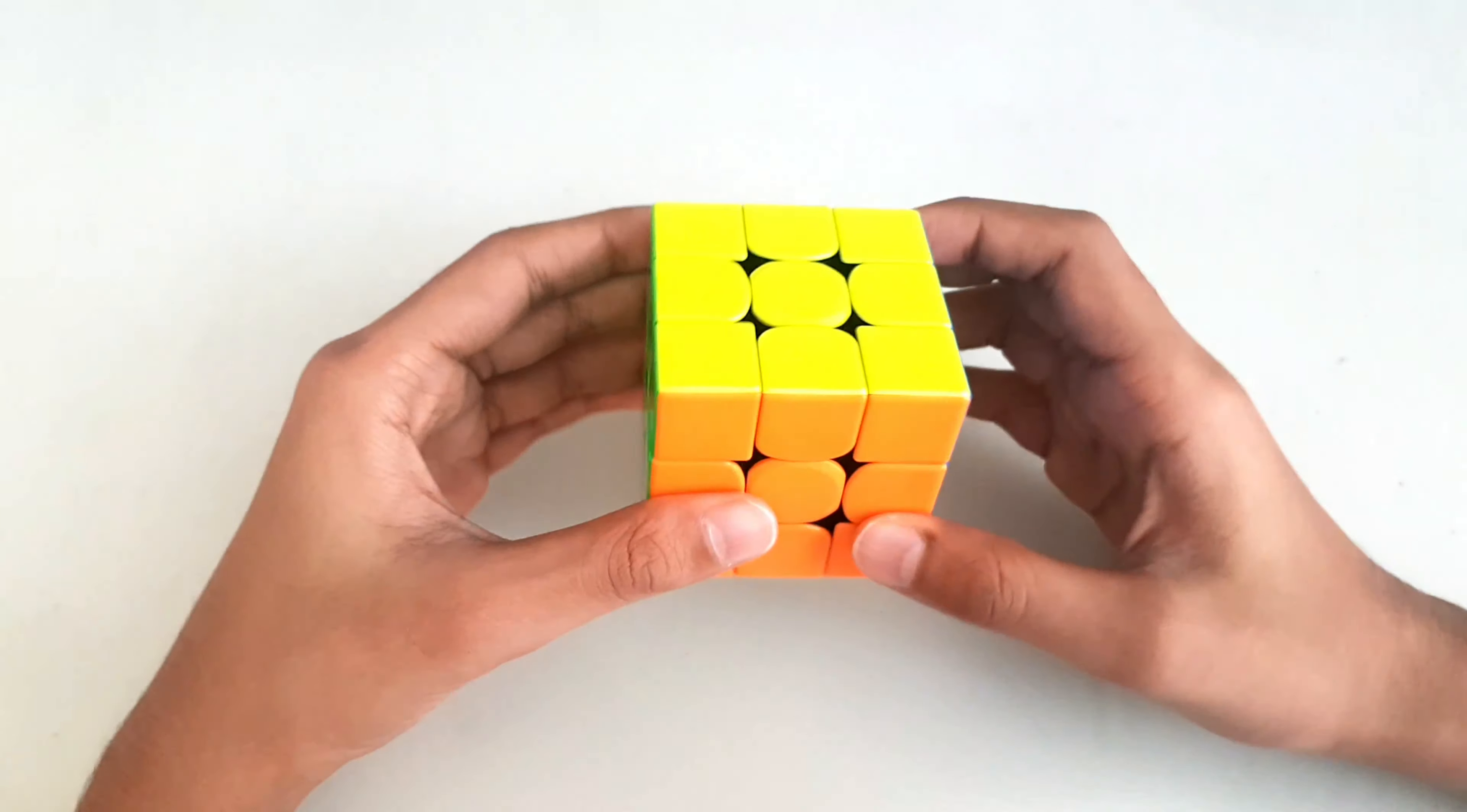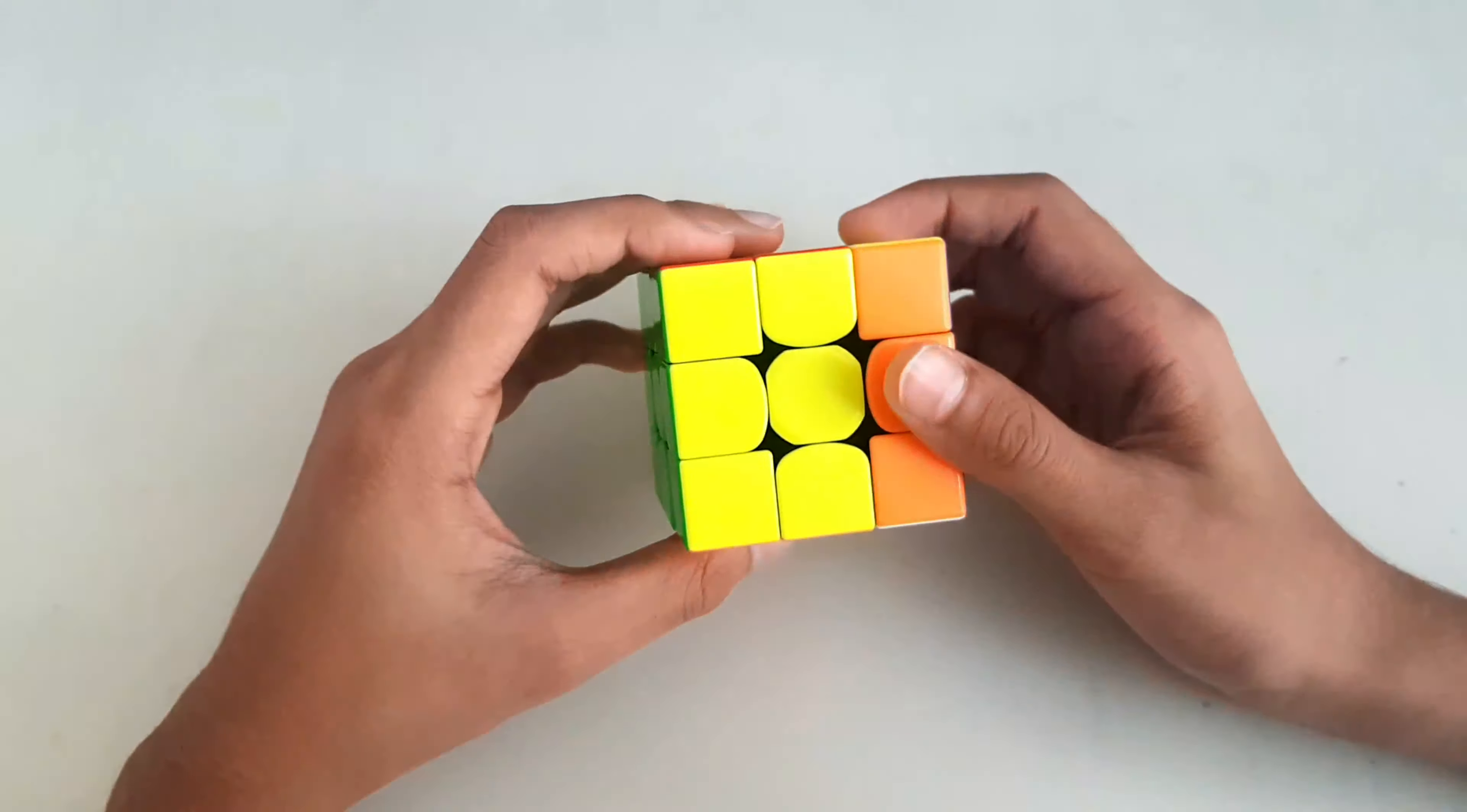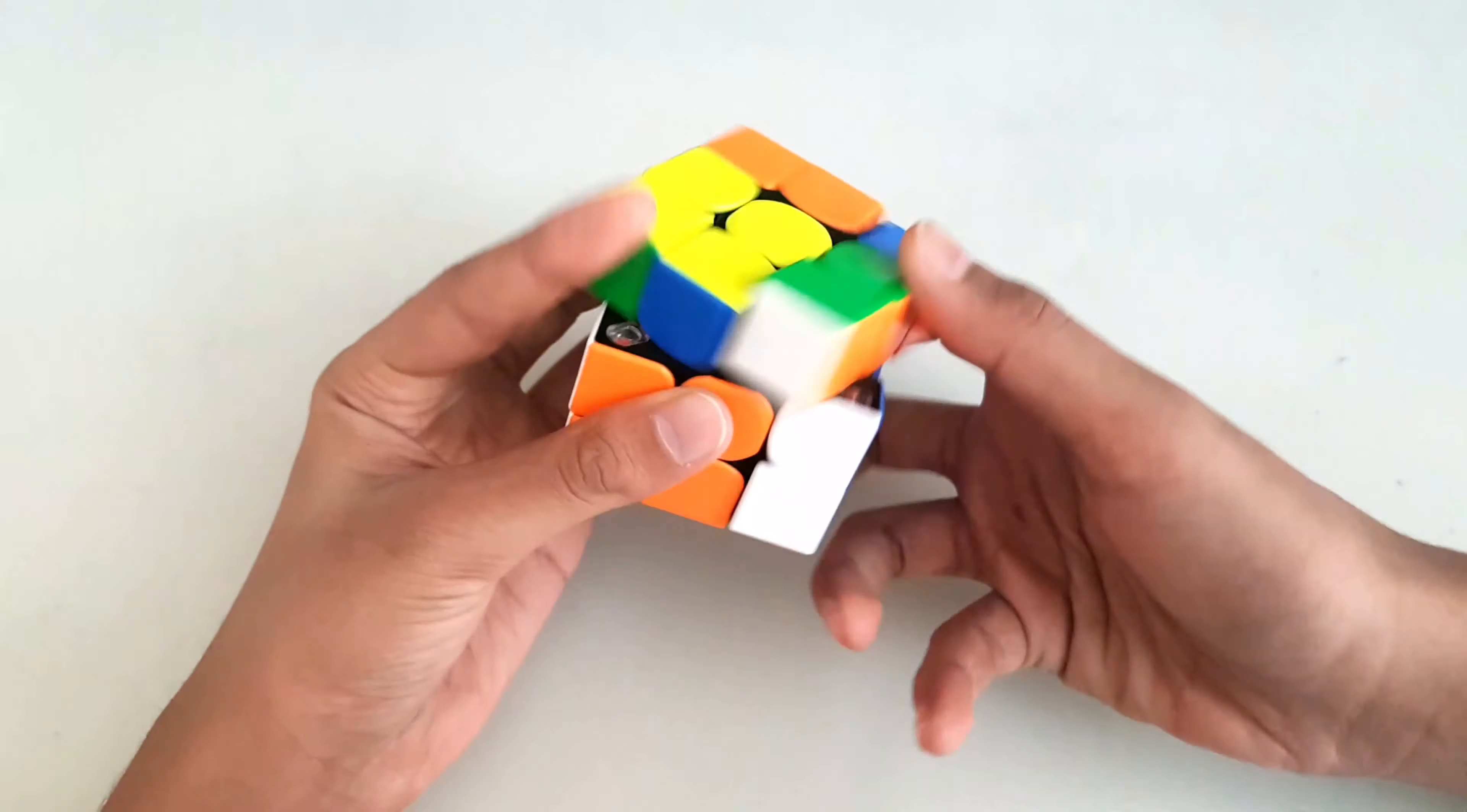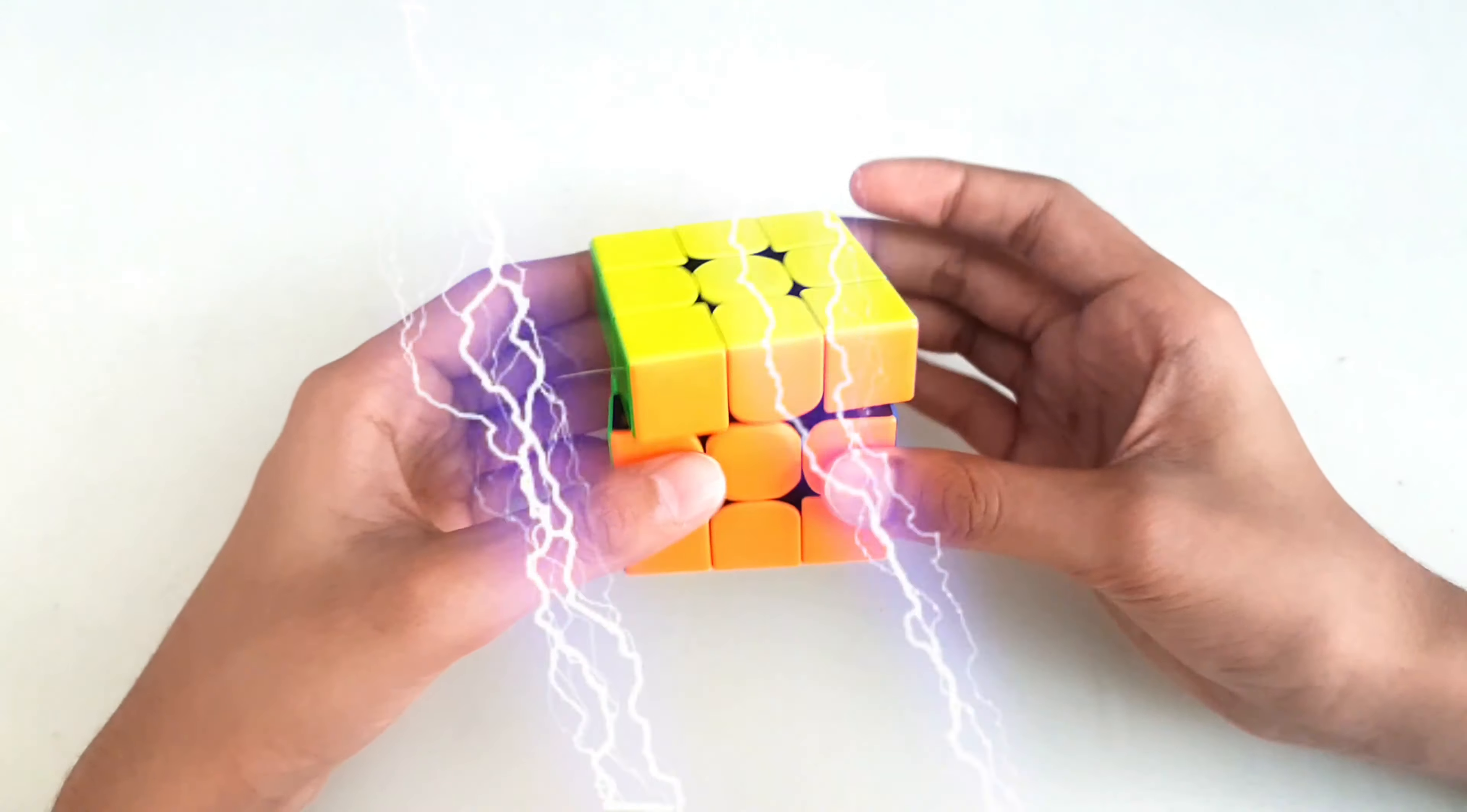This was the easy part of winter variation. There are more algorithms to learn. You can access the PDF from cubeskills.com—I'll leave that link in the description. I'll also be making part two of winter variations where I'll be putting more algorithms and demonstrating them.